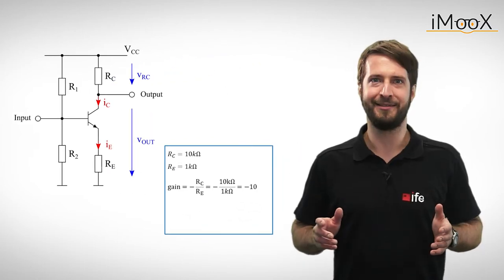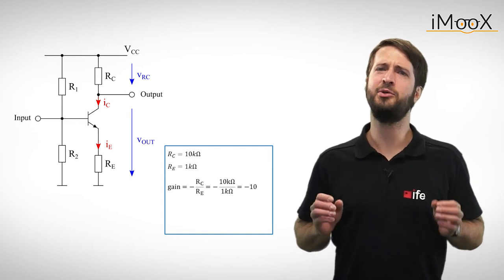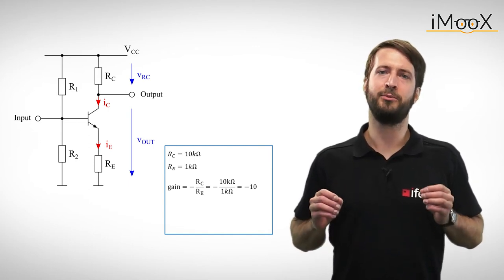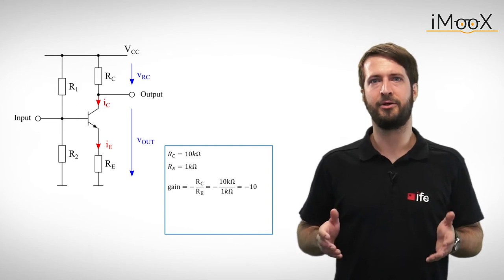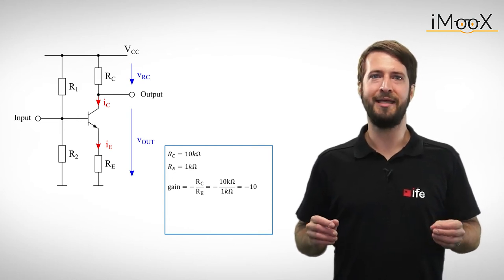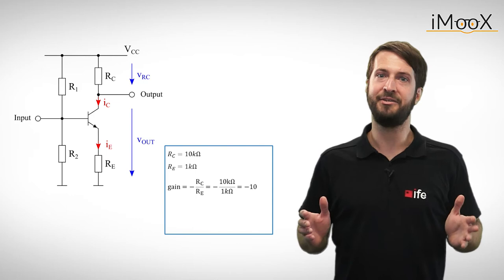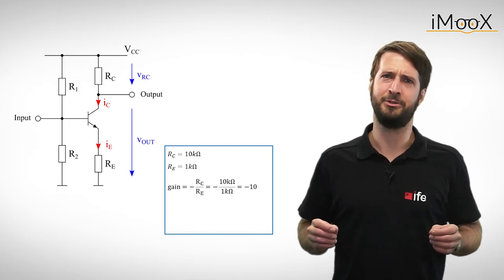But wait! That does seem a little bit too easy. What if we would make RE zero ohms? According to our calculation, the gain of the circuit would become minus infinity. That can't be right.